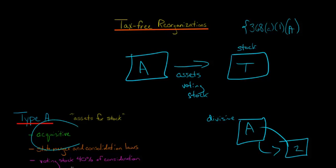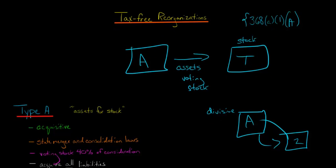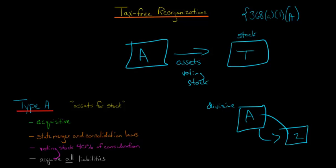Getting back to the acquisitive reorganization, which is Type A, we've got assets and voting stock being given to the target in exchange for the target's stock. This is going to qualify as a tax-free reorganization if the following requirements are met. The voting stock being given to the target has to be at least 40% of the consideration being given.